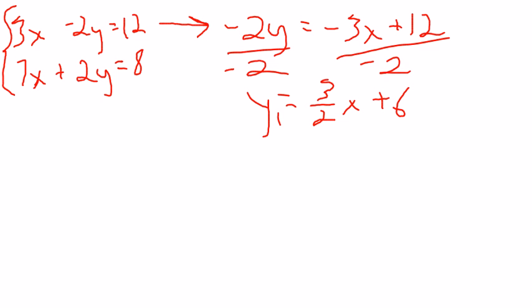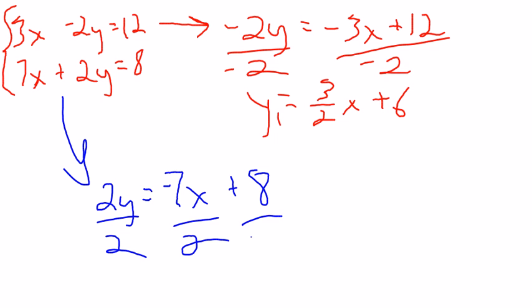My next one, I'm going to take this one and solve it. Subtract 7x. I get 2y equals negative 7x. I'm putting it there because it's more of a y equals mx plus b form, plus 8. Then I divide everything by 2.